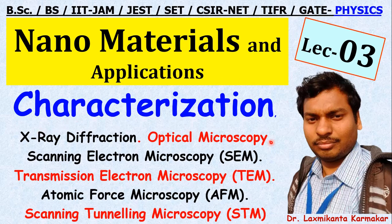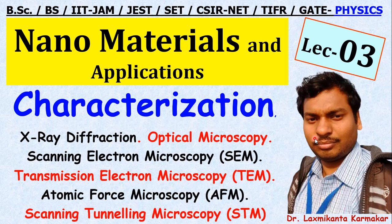The characterization techniques include X-ray diffraction, optical microscope, scanning electron microscopy (SEM), transmission electron microscopy (TEM), atomic force microscopy (AFM), and scanning tunneling microscopy (STM). In the first lecture we discussed nanomaterials and their types. In the second lecture we discussed synthesis of nanomaterials. In this lecture we want to characterize — that is, obtain the properties of nanomaterials from these experiments. You can also determine whether a material is a nanomaterial or not from this characterization.